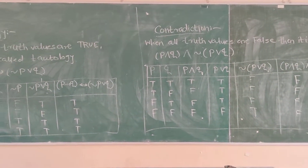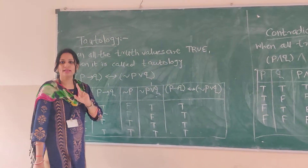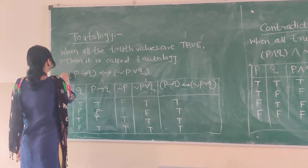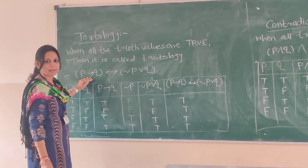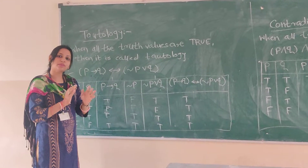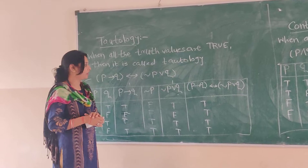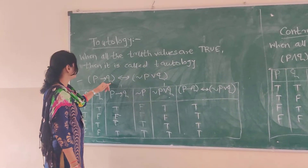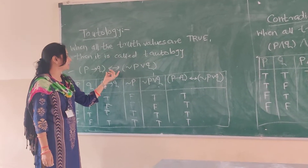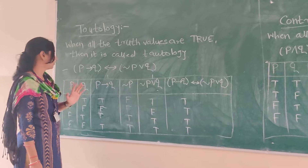Tautology is when all the truth values are true. Suppose we have a particular example and we have to solve the truth table for it. The process is the same as we have seen in our last section. The example is: p tends to q, then by biconditional statement, the equivalent form is negation of p or q — this we have to solve.